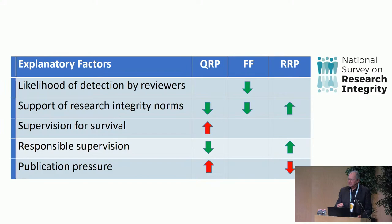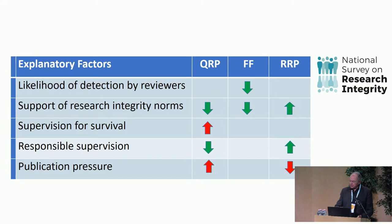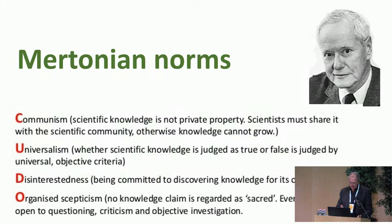Responsible supervision means supervisors teach you how to do science as well as possible without being distracted by career perspectives, financial gains, or fame. They teach you to pre-register, curate your data well, upload them to repositories, be a good peer reviewer — even though you don't normally get career points for that. Finally, perceived publication pressure is strongly associated with more questionable research practices and fewer responsible research practices, because responsible practices like data curation take a lot of time and when you don't get career points for it, people don't do it.